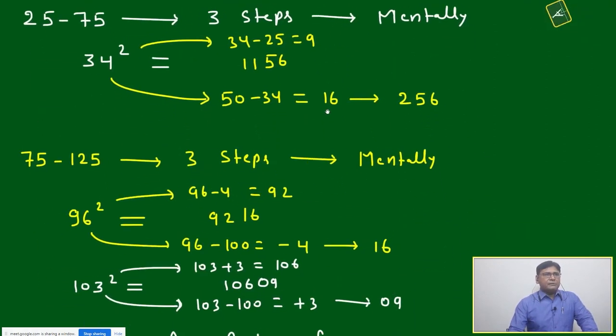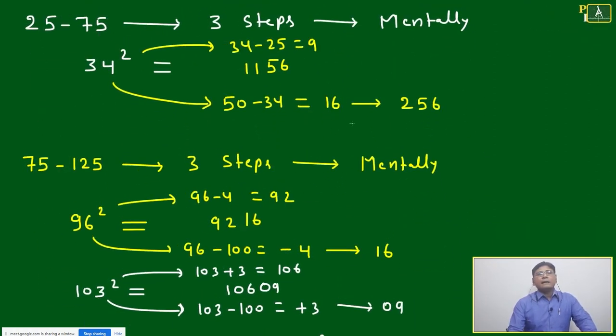I might have discussed the perfect square technique earlier, but again I'm just revising. If numbers lie between 25 to 75, you can find the perfect square in three steps mentally—no need to write. If you're writing then don't do it. If you're writing and doing, then don't follow this method. Whatever old method you're following, you follow that. If you're able to do it mentally then only it is good, but to achieve it your brain should do it mentally within a fraction of a second. For that, do some practice.